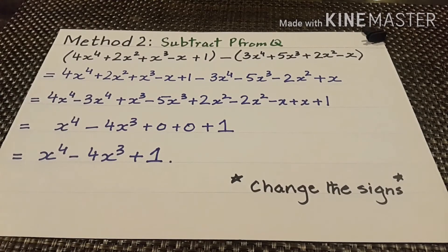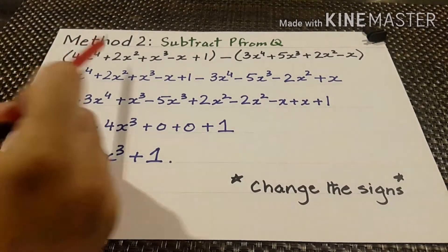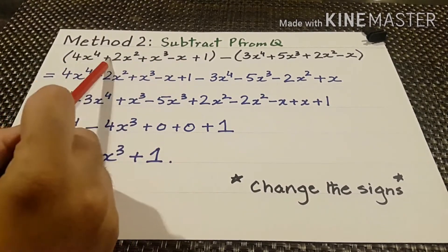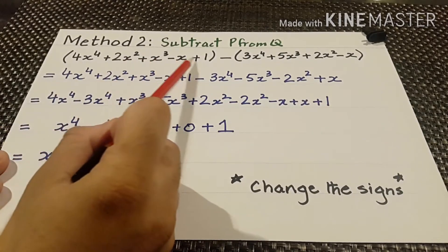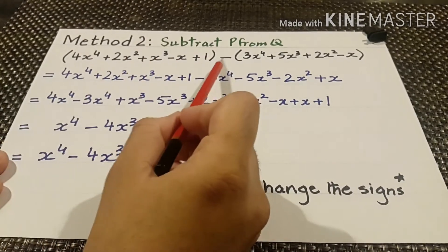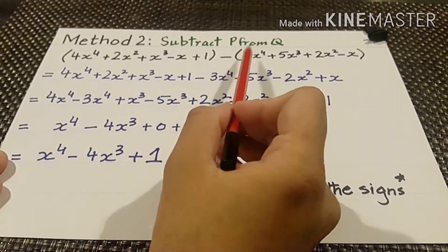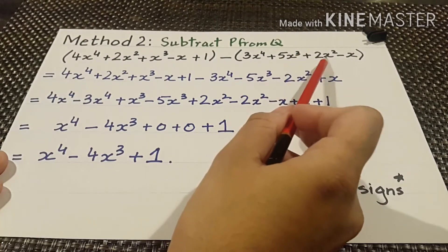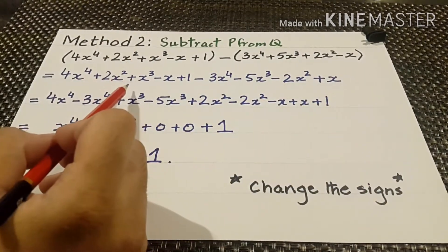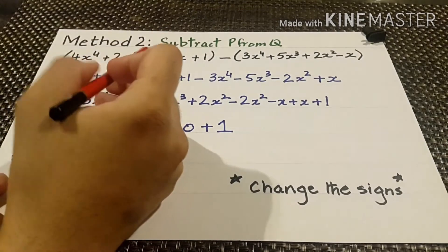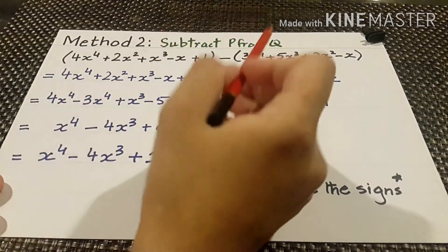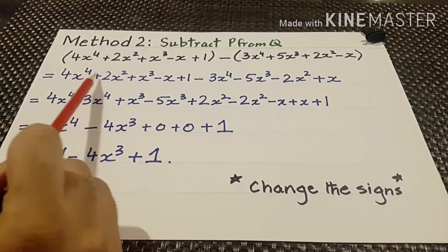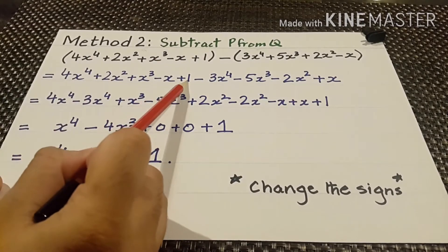The second method of subtraction is similar to that of addition, but here we just change the sign. First we write the values of q: 4x to the power 4 plus 2x squared plus x cubed minus x plus 1. Then we put a minus sign and write the values of p: 3x to the power 4 plus 5x cubed plus 2x squared minus x.